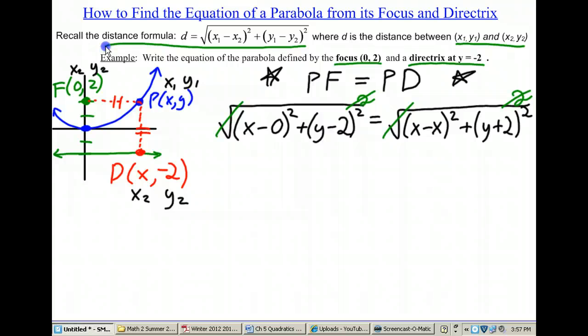Looking underneath the square root I have (x minus 0) squared. That just simplifies to x squared. And I also have a (y minus 2) squared. I'm going to deal with that in just a second. On the right side (x minus x) that's just 0 with a squared on the outside plus (y plus 2) squared.